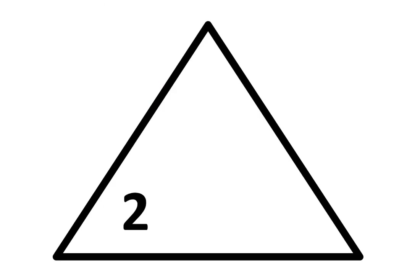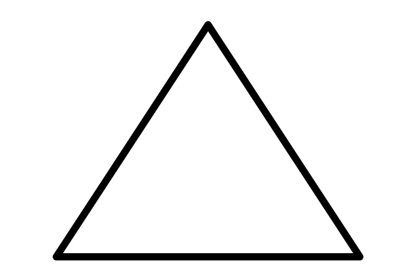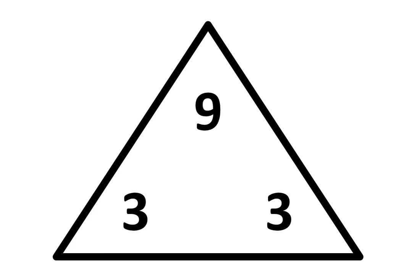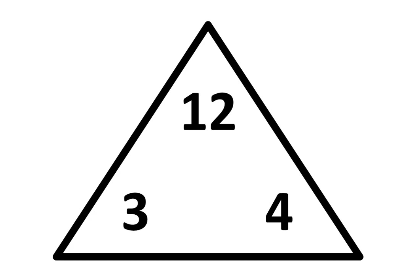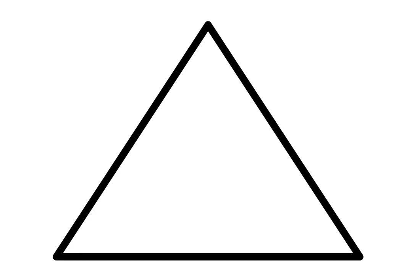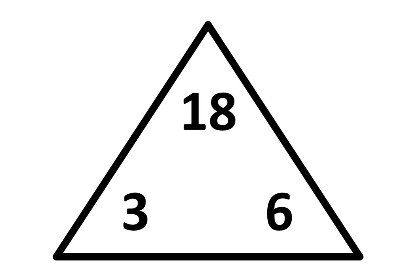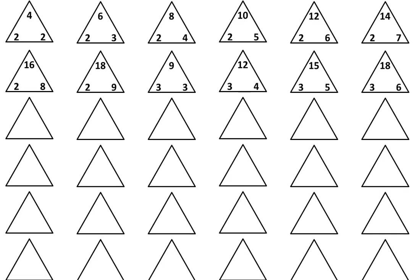Let's move to the second row. In the next triangle, write 2 times 8 is equal to 16. In the next triangle, write 2 times 9 is equal to 18. In the next triangle, write 3 times 3 is equal to 9. In the next triangle, write 3 times 4 is equal to 12. In the next triangle, write 3 times 5 is equal to 15. In the next triangle, write 3 times 6 is equal to 18. And that completes the second row.